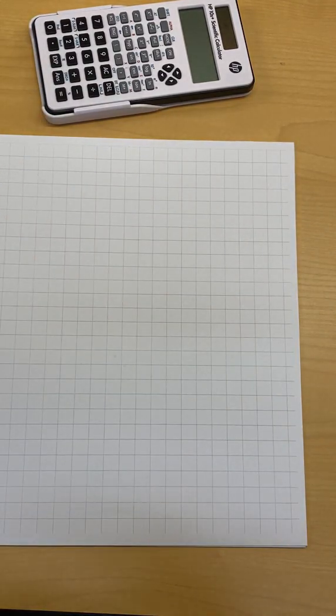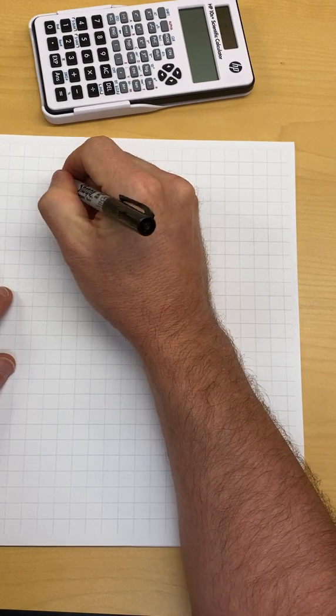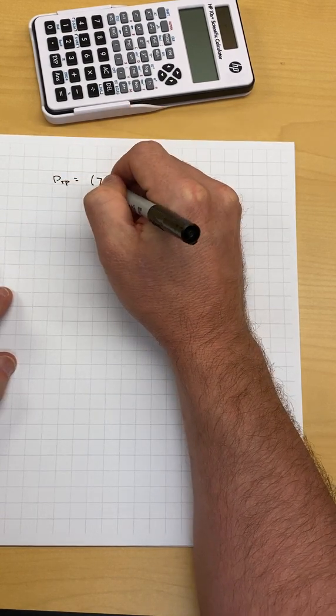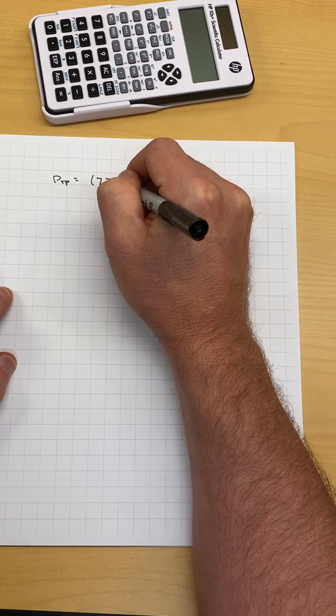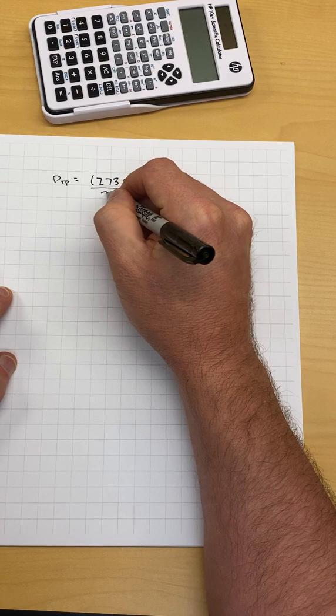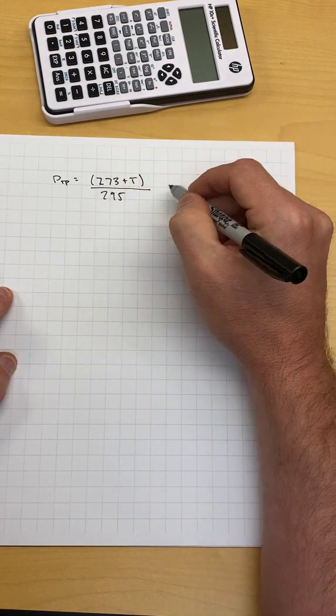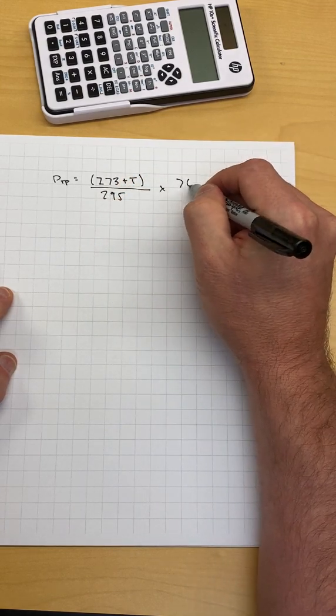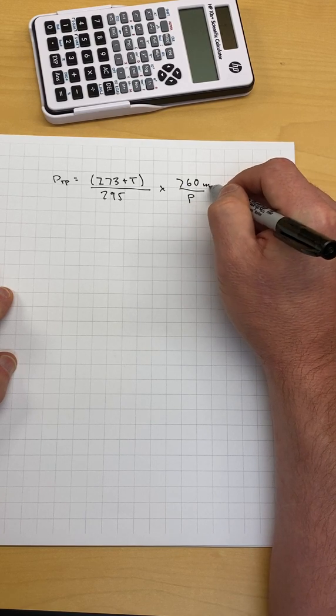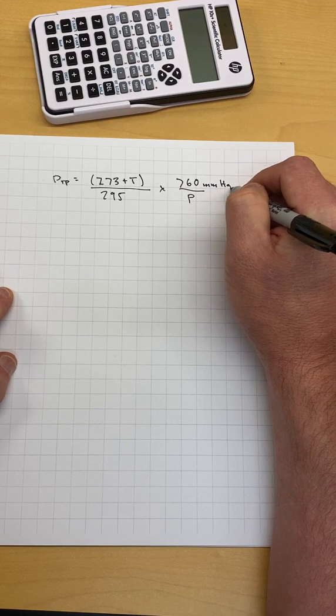So I'm going to rewrite that formula. PTP is equal to 273 plus the temperature divided by 295 times 760. This has units of millimeters of HG divided by the pressure. So I can write millimeters HG.